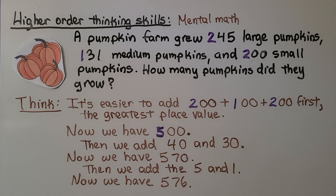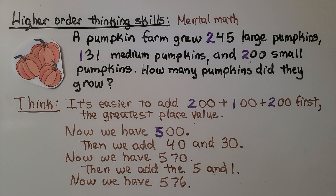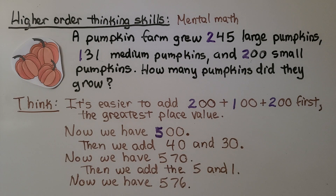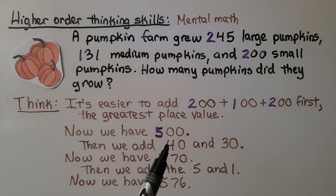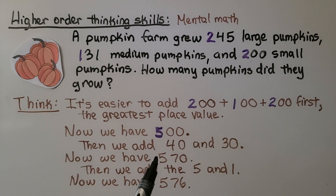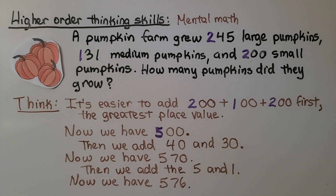Let's try some higher-order thinking skills with mental math. A pumpkin farm grew 245 large pumpkins, 131 medium pumpkins, and 200 small pumpkins. How many pumpkins did they grow? It's easier to add 200 plus 100 plus 200 first — the greatest place values — giving us 500. Then we add 40 and 30, giving us 570. Then we add the ones, 5 and 1, that's 6. We have 576 pumpkins.